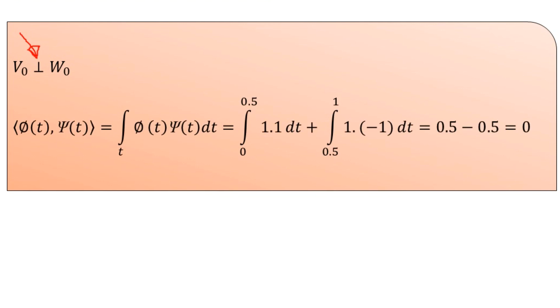In general, for the Haar scaling function φ(t) and the Haar wavelet function ψ(t), we find their inner product. The inner product is represented as the time integral of φ(t) multiplied by ψ(t) dt. Let us split this integral into two terms.